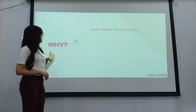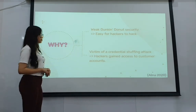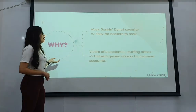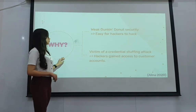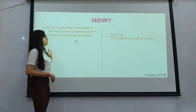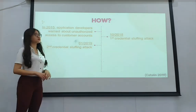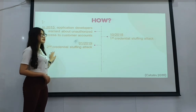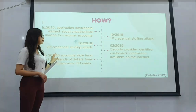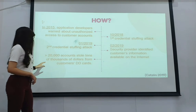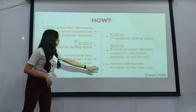There are two main reasons for this data breach. The first is the weak security of DD Perks, which made it easy for hackers to hack and leak information. The company was also a victim of a credential stuffing attack, giving hackers access to customer accounts. In 2015, the applications developed were vulnerable to unauthorized access. Two credential stuffing attacks happened in 2018 and 2019. In February 2019, security providers identified customer information available on the internet. More than 20,000 accounts had tens of thousands of dollars stolen from customers' DD cards, and hackers sold the hacked accounts on the dark web.